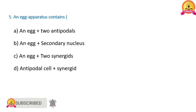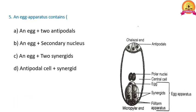Next: an egg apparatus contains what? A matured embryo sac is 7-celled and 8-nucleated. The three cells towards the chalazal end are antipodal cells, the polar nuclei are centrally located, and the three cells towards the micropylar end form the egg apparatus. In the egg apparatus, the central one is called the egg, and the other two cells are called synergids. Therefore, the egg apparatus contains one egg and two synergids. Option C is correct.